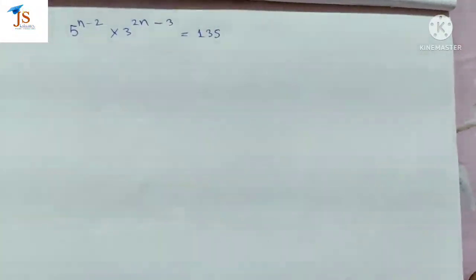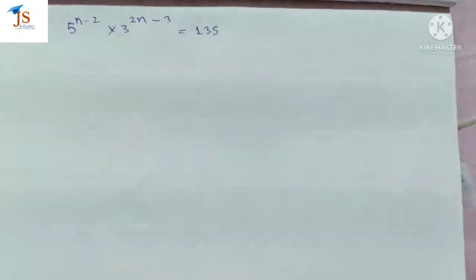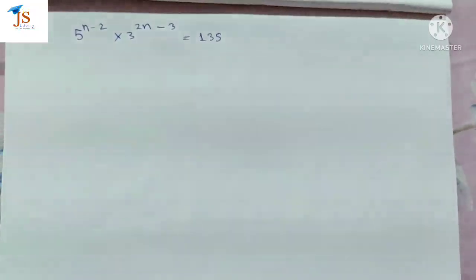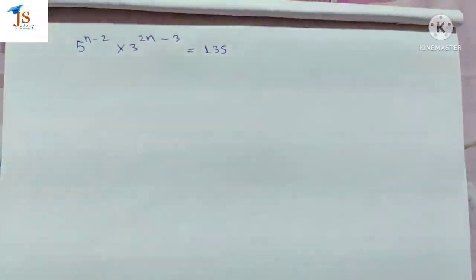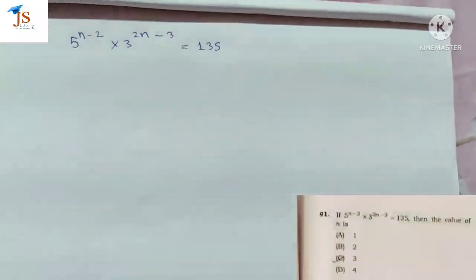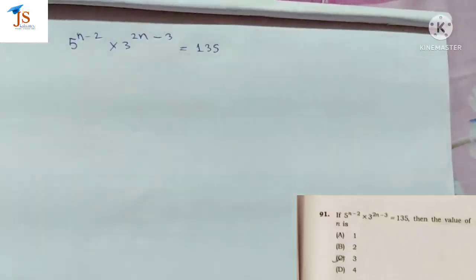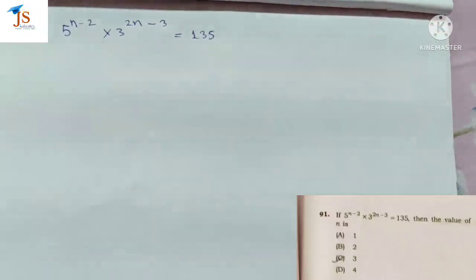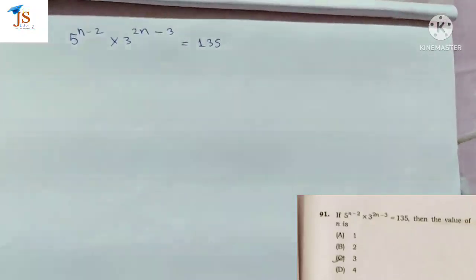Hello friends, welcome to JS is me revolution to education journey. I have a question from 2020 DHS exam, from the math part. The question is: if 5 to the power n-2 multiplied by 3, divided by 2 to the power 2n-3, is equal to 135, then find the value of n.